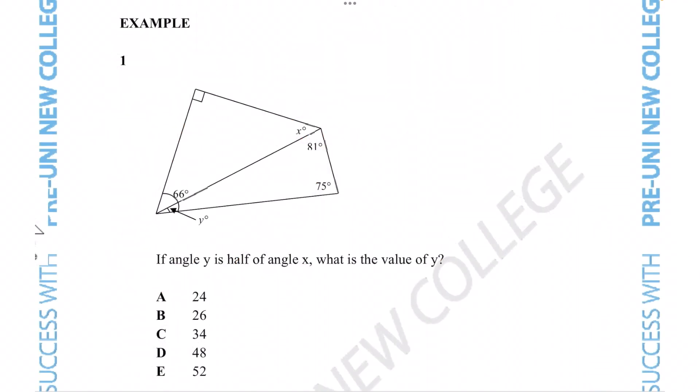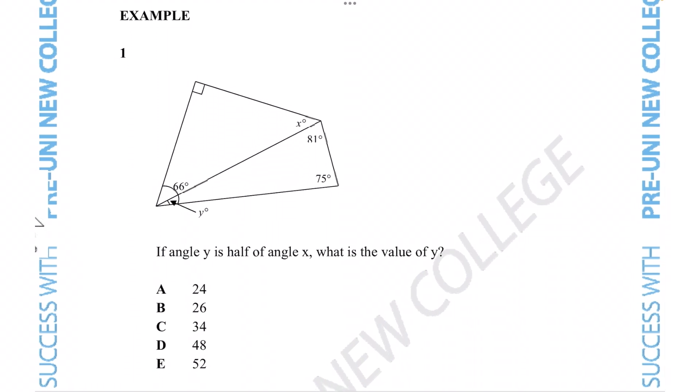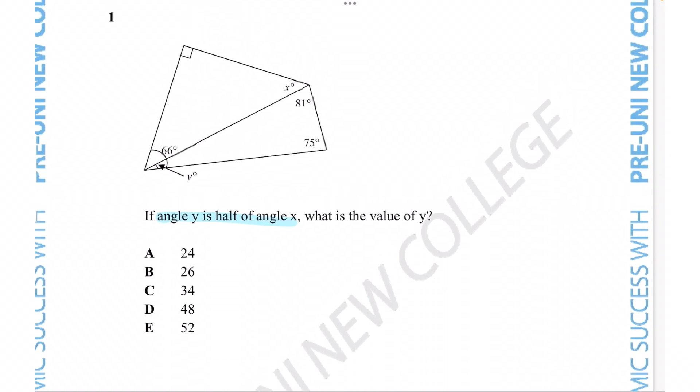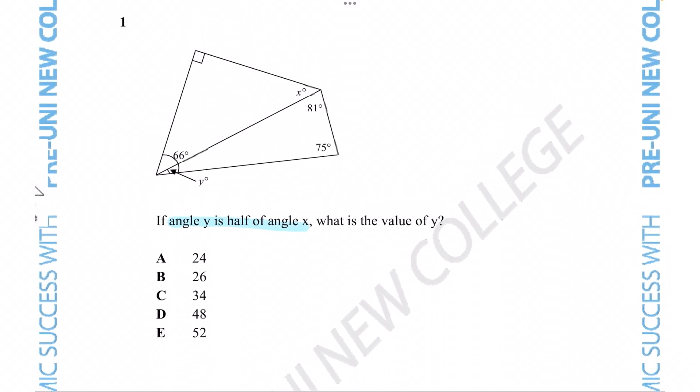Let's see if we can put them into practice by tackling this example question. Over here, we see that angle y is half of angle x. What is the value of y? So we see the two mystery values here.